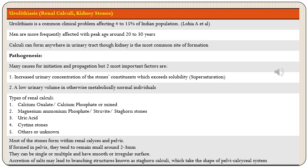Most of these stones form within the renal calyces and pelvis. If formed in the pelvis they tend to remain small, around 2 to 3 millimeters. They can be single or multiple with smooth or irregular surfaces. Accretion of salts may lead to branching structures known as staghorn calculi, which take the shape of the pelvicalyceal system.